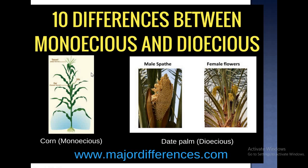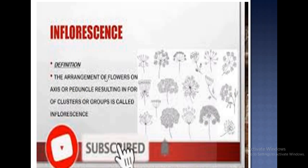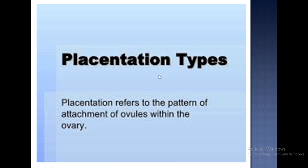Here you can see the corn plant has both male and female flowers on the same plant, whereas in the date farm, the male plant and the female plant are separate. Now, inflorescence is the arrangement of flowers on the floral axis, resulting in clusters or groups. Placentation is the arrangement, pattern, or attachment of ovules within the ovary.